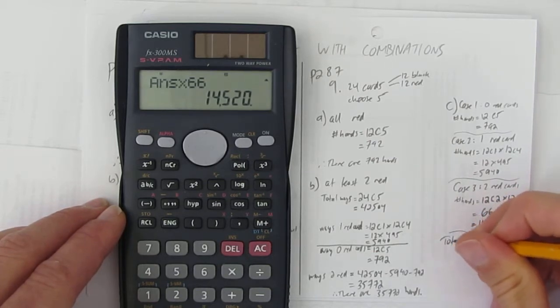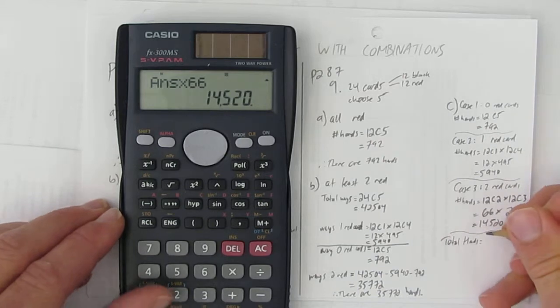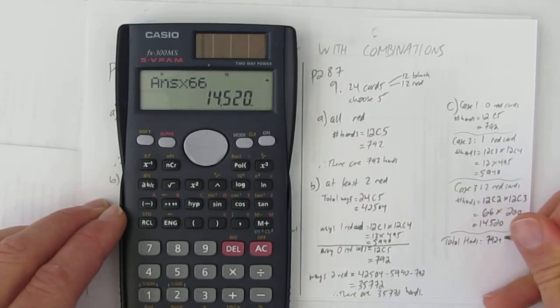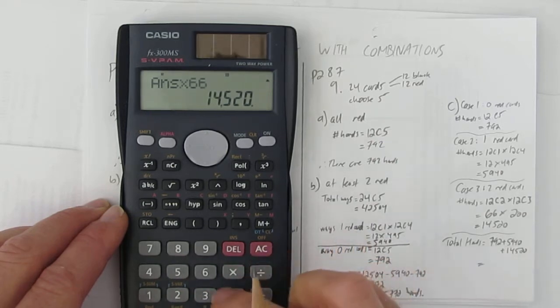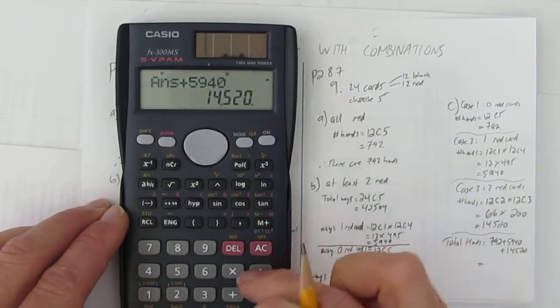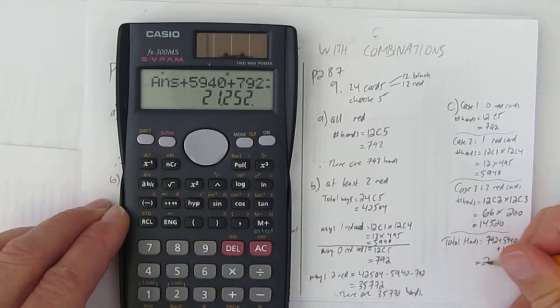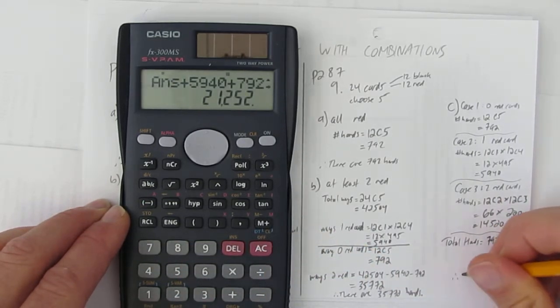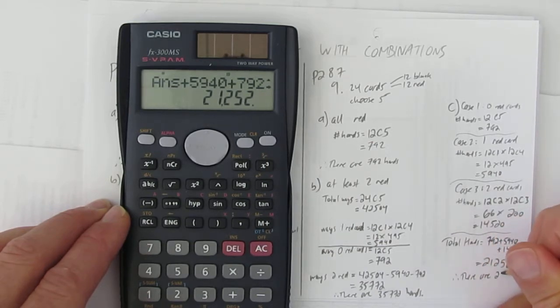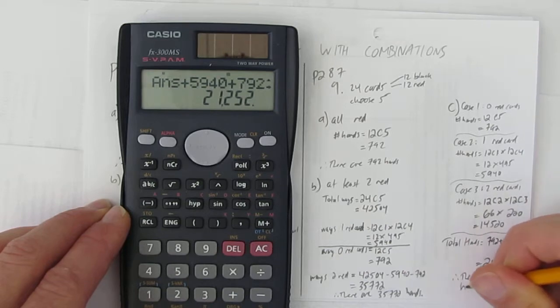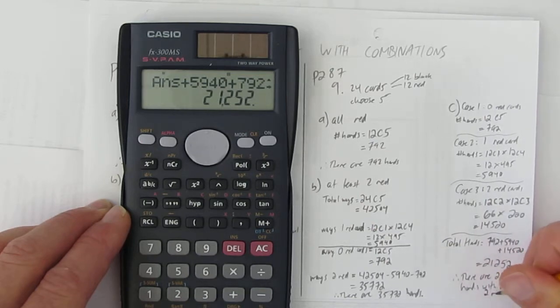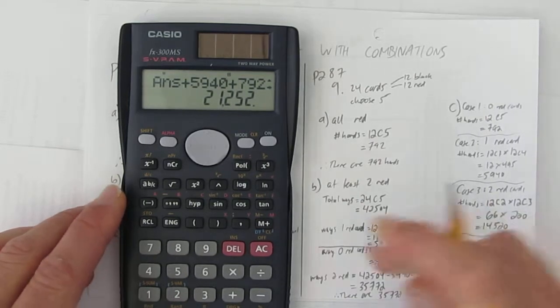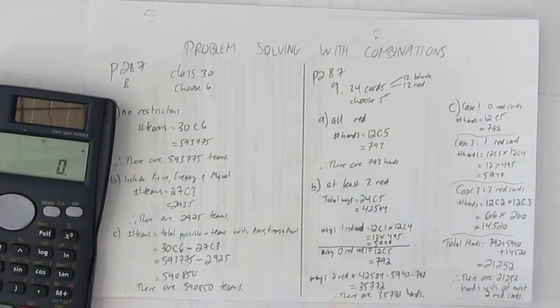So your total hands is just going to be to add them all up. That is, it's no red cards plus one red card plus two red cards. Let's add them all up. 14,520 plus 5940 plus 792. And you get 21,252. Therefore, there are 21,252 hands with, at most, two red cards. And so those are a bunch of different examples of problem solving with combinations.